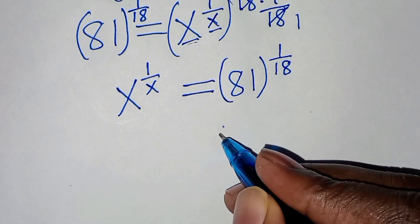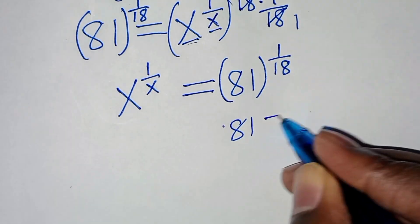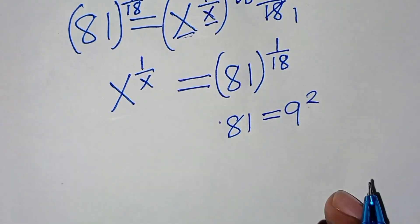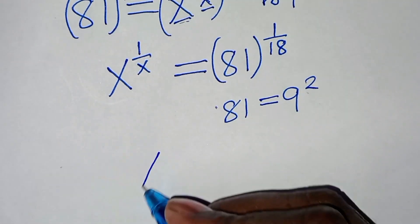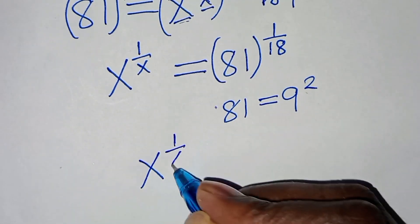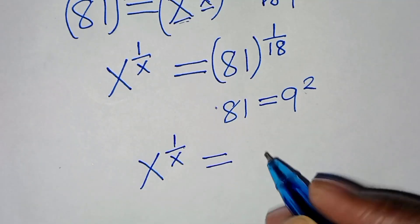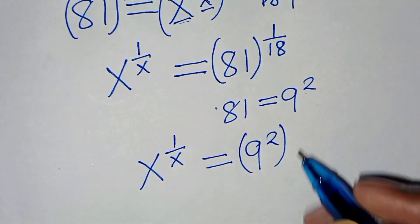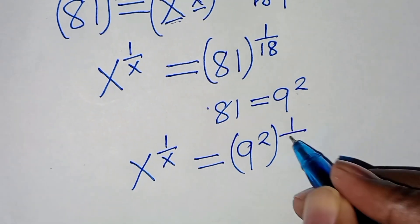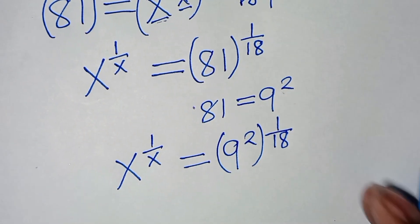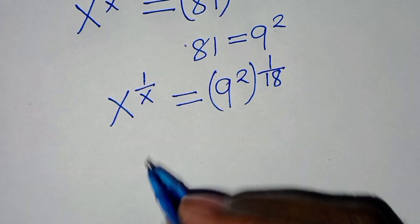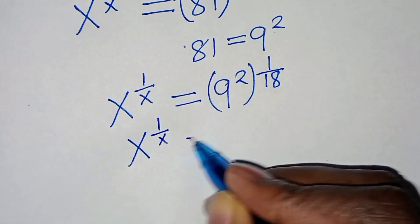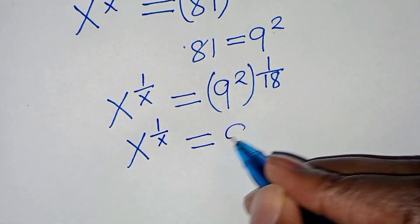We can express 81 as 9 to the power 2. So this implies that x to the power 1 over x is the same thing as 9 to the power 2, multiplied by 1 over 18. So here we have x to the power 1 over x, which is equal to 9.